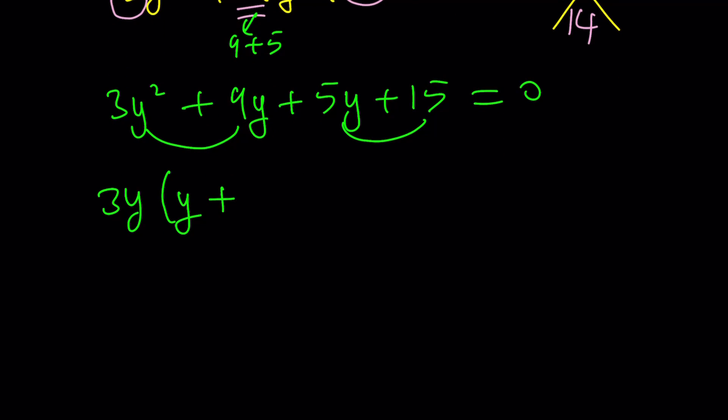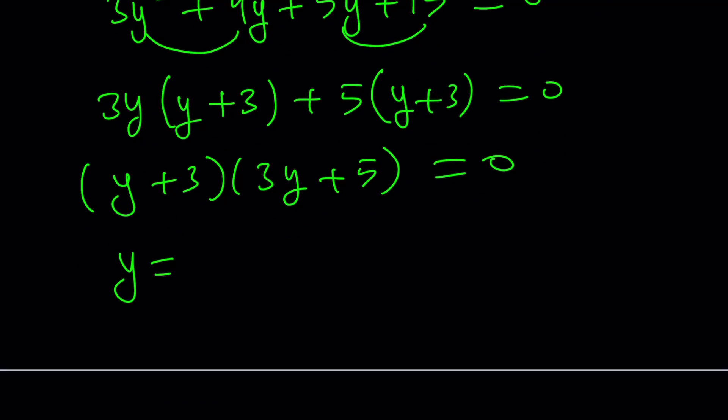So, let's see how this works. 3y times y plus 3 plus 5 times y plus 3 equals 0. And from here, we get y plus 3 times 3y plus 5 equals 0. And from here, we get two solutions. This is quadratic, very easy. By the way, you could also use the quadratic formula. You didn't have to factor.